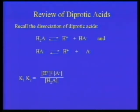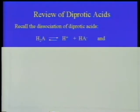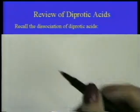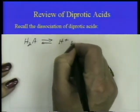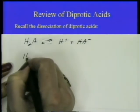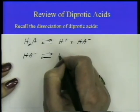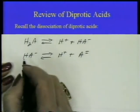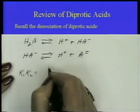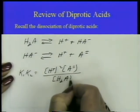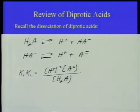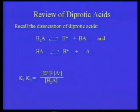The combined expression K₁·K₂ equals [H⁺]² times [A²⁻] over [H₂A]. Make sure you have that correct in your notes. If you have problems with this, go back to the section on acid-base chemistry and review the dissociation of diprotic acids.